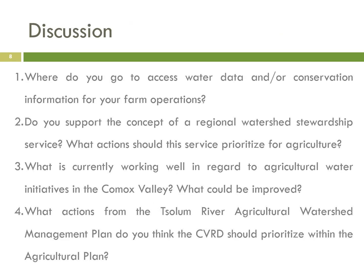With that in mind, we have the following discussion questions for your feedback. First, where do you go to access your water data or conservation information for your farm operations? Second, do you support the concept of a regional watershed stewardship service — one of the key recommendations from the plan — and what actions should this service prioritize for agriculture? Third, what is currently working well in regards to agricultural watershed initiatives in the Comox Valley, and what could be improved? And lastly, what actions from the Solem River Agricultural Watershed Management Plan do you think the regional district should prioritize within this agricultural plan update?